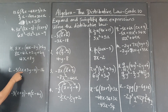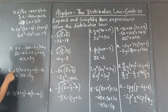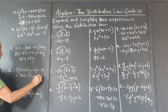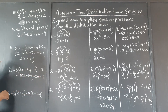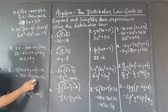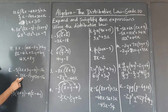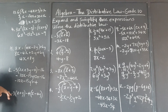Negative 5 times 2x is negative 10x. Negative 5 times 3y is negative 15y. Negative 5 times negative 4 is positive 20. The minus 16 is not affected — it's separated. The only two terms we can combine are 20 minus 16: the negative 10x is an x term and negative 15y is a y term, so we write those back. 20 minus 16 is positive 4, so the final answer is negative 10x minus 15y plus 4.